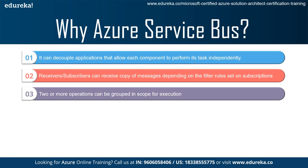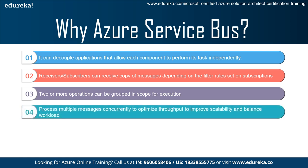Two or more operations can be grouped in scope for execution. This is a feature called transactions, which groups two or more operations together for execution in a scope, ensuring these operations either succeed or fail jointly and not partially. The scope is referred to as atomic, meaning the entire transaction always succeeds or fails as one unit of work and is never left in a half-complete state. With multiple concurrent consumers, you can process multiple messages concurrently to optimize throughput, improve scalability and availability, and balance the workload, allowing competing consumers to each safely obtain exclusive ownership of specific messages.